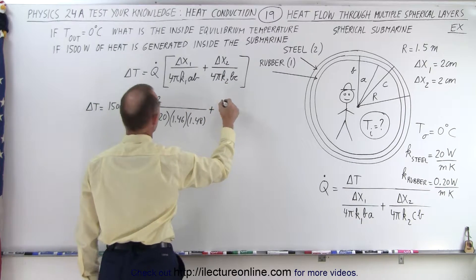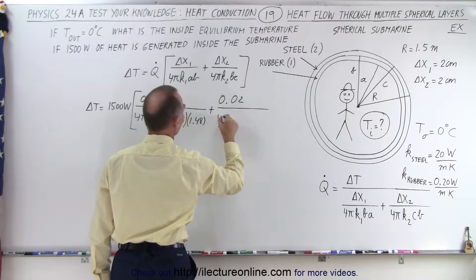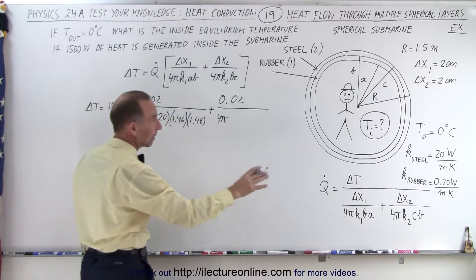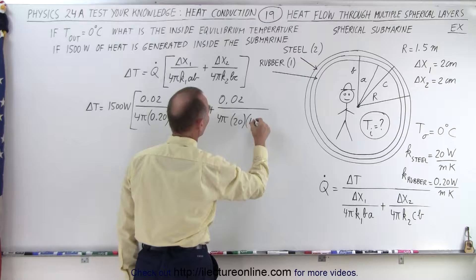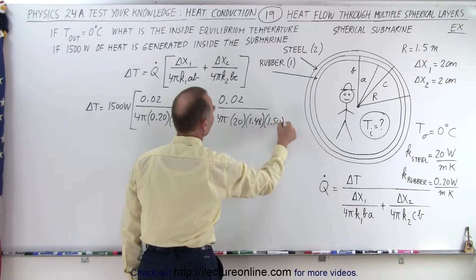Plus the delta X of the second layer, which is the same thickness, divided by 4 pi times K2. Now the second layer is steel, and so the K for steel is 20, times B times C, which is 1.48, multiplied by 1.50.